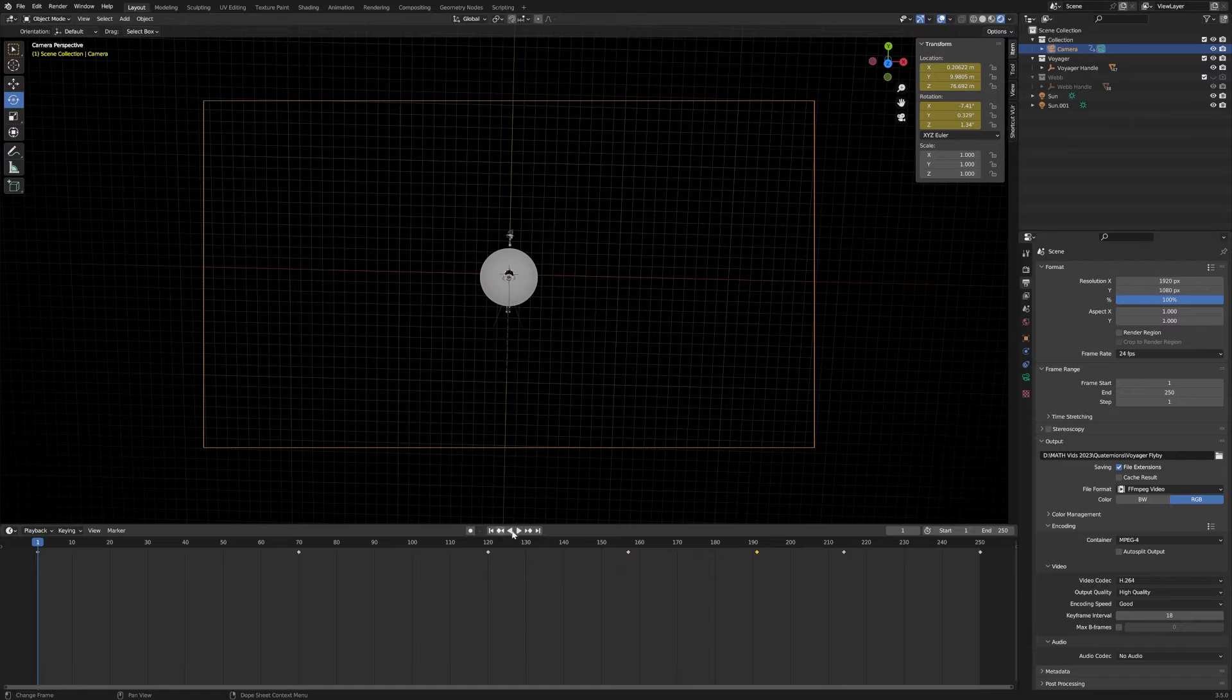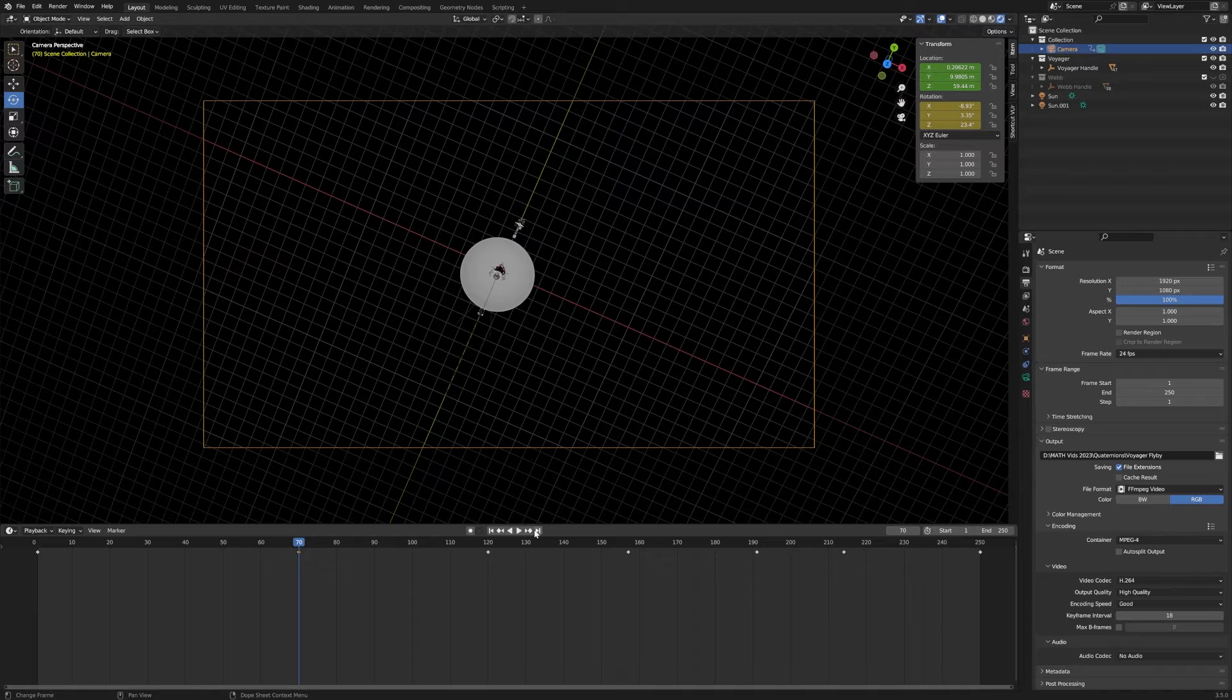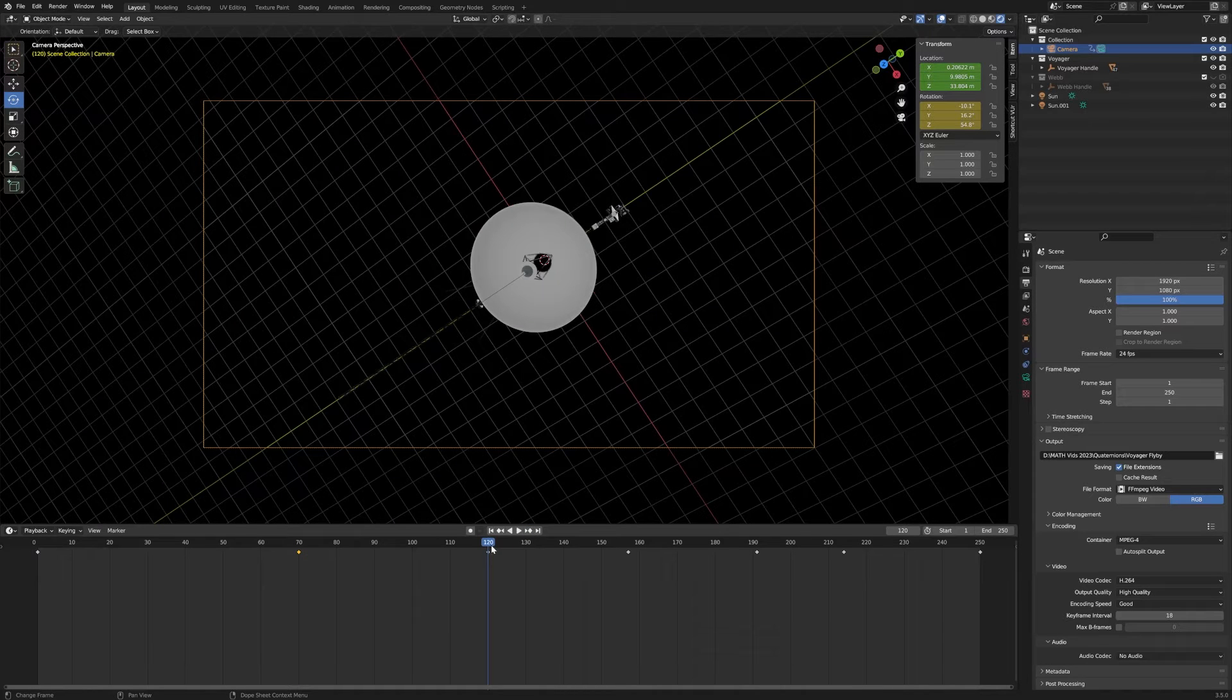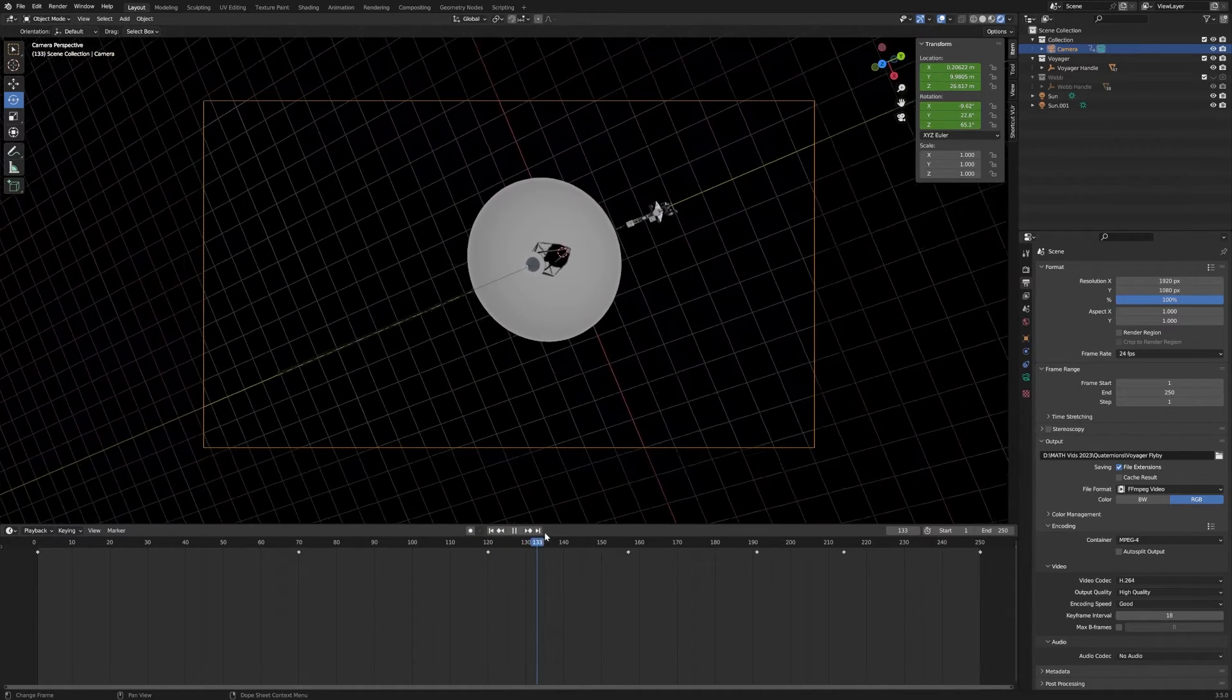And then we'll go to a later frame and say, at this frame, we want you to be in this other configuration. And then the computer interpolates between those two. It fills in the gaps.